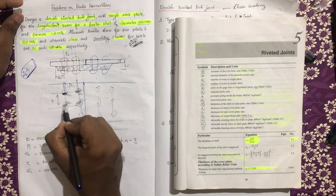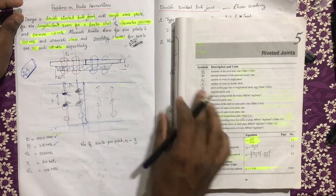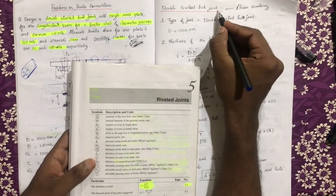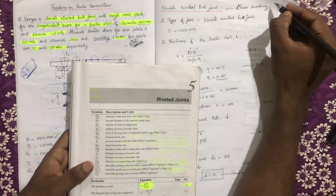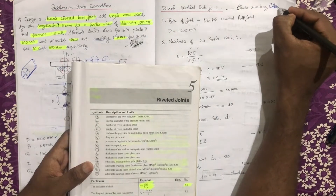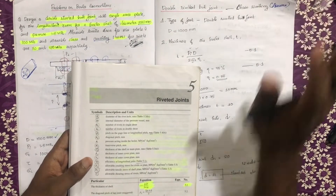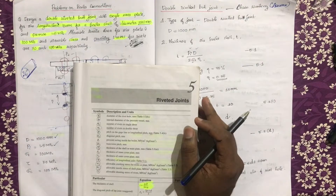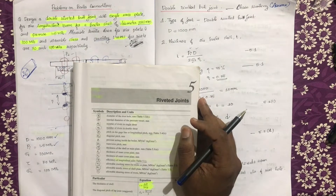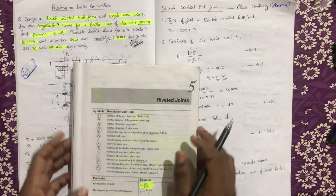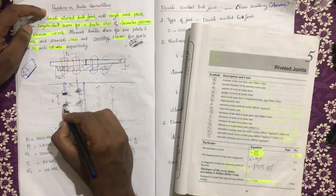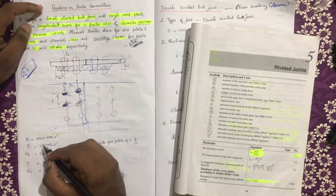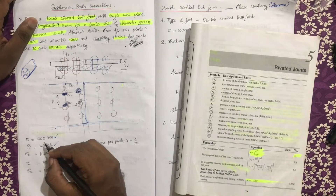We assume chain riveting. First of all, we have to identify the chain riveting. We assume chain riveting is already available. I am going to do double riveting. The chain riveting comes down the net.